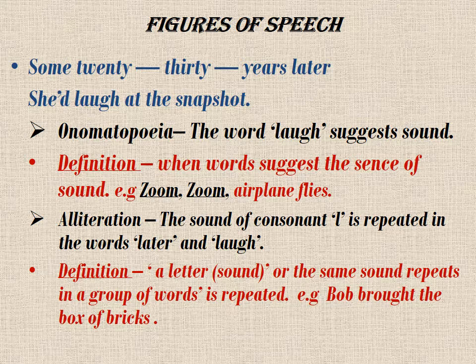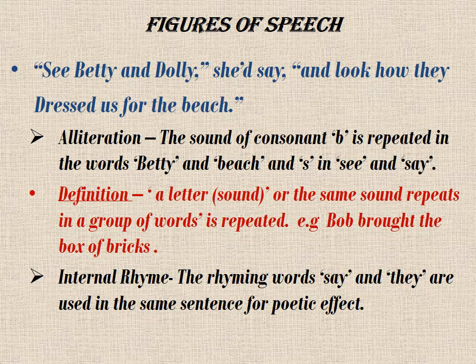'Betty and Dolly should say, and look how they dressed us for the beach.' Here 'b' sound repeats in 'Betty' and 'beach,' and 's' repeats in 'see' and 'say' — that is alliteration. We also find internal rhyme: 'say' and 'they' rhyme within the same line, sharing the 'ey' sound.